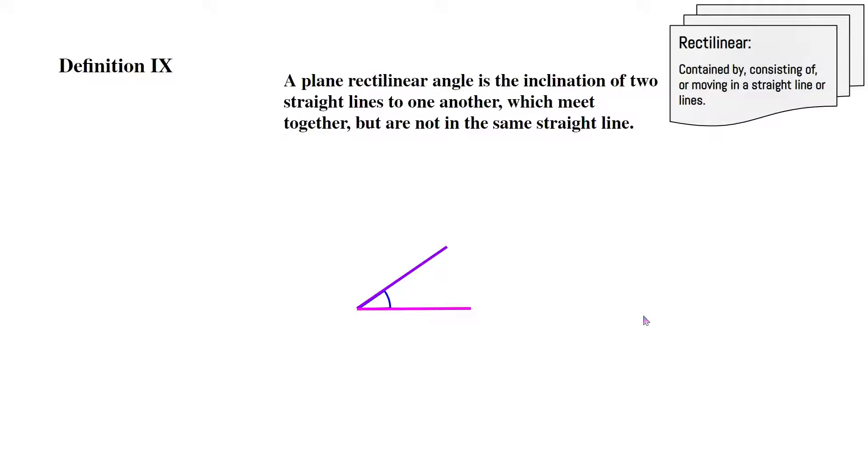Now this is also kind of like definition 8. This blue angle is formed by a slope or slant of these two lines, the purple and the pink. So these two lines meet up at this point and then they create this angle. Now these two lines cannot be in the same straight line, or else there would be no angle.